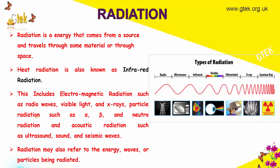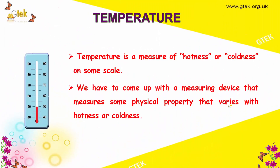Types of radiation also include X-rays, particle radiation such as alpha, beta, and neutral radiation, and acoustic radiation such as ultrasound and seismic waves. Radiation may also refer to the energy waves or particles being radiated. Types visible here include radio, microwave, infrared, visible, ultraviolet, X-ray, and gamma radiation.